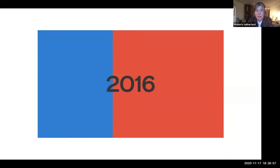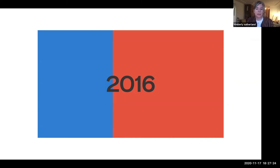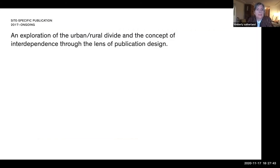On to Rural — my most recent and ongoing project, which started back in 2016. As you may remember, there was a pretty intense election that took place. Because of the 2016 election, I was witnessing this growing narrative around the urban-rural divide, pitting these two communities against each other. I wanted to find a way to use design to investigate that, because I come from a very small rural town in Canada. Though I live in cities now, I know you can't paint communities in black and white like that — there are nuances being lost in these divisions. Rural is a site-specific publication that is an exploration of the urban-rural divide and the concept of interdependence through the lens of publication design.